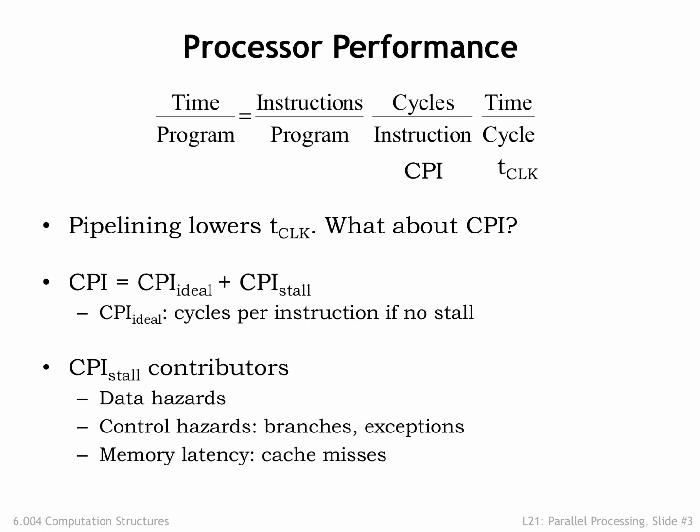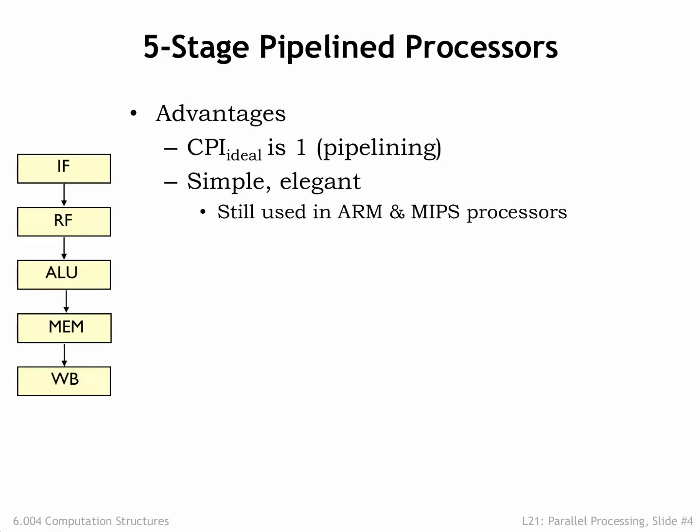For example, if a six-instruction loop with a load takes eight cycles to complete, CPI stall for the loop would be two-sixths — in other words, two extra cycles for every six instructions. Our classic five-stage pipeline is an effective compromise that allows for a substantial reduction of t-clock while keeping CPI stall to a reasonably modest value.